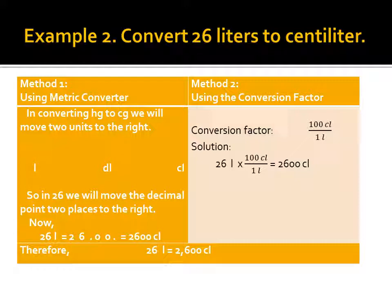Example 2: convert 26 liters to centiliters. Method 1 — using the metric converter: in converting liters to centiliters, move 2 units to the right, so move the decimal point 2 places to the right. Thus 26 liters = 2,600 centiliters. Method 2 — using the conversion factor: 1 liter = 100 centiliters. So 26 liters × 100 = 2,600 centiliters.